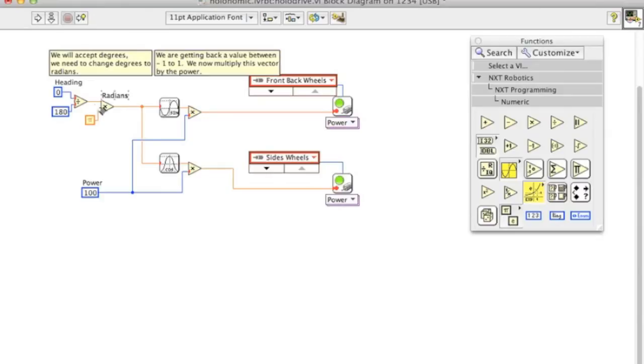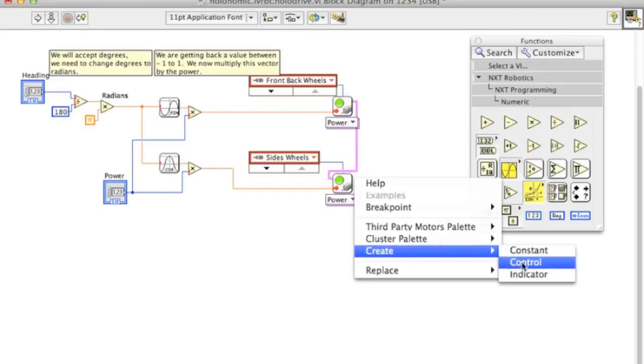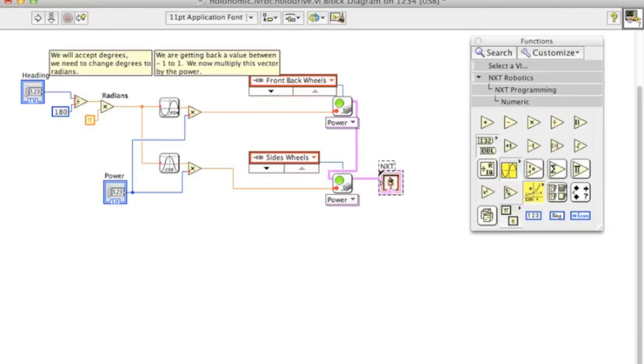Now if you are going to have a holonomic drive robot, you're not going to want to redo this code over and over. So what you're going to want to do is turn it into a sub-VI. So, change your inputs, like heading and power, into controls.